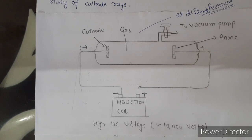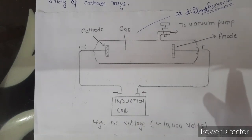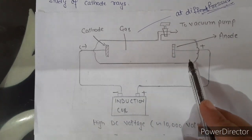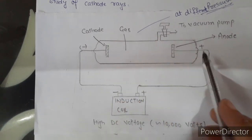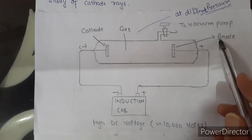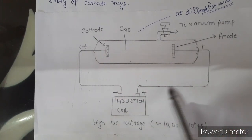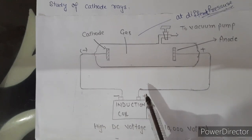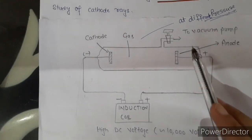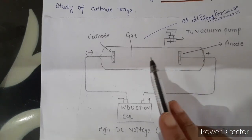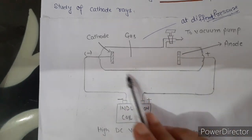In his experiment, William Crookes studied the conduction of electricity through gases at low pressure. He took a discharge tube made of glass, about 60 cm long, sealed at both ends and fitted with two metal electrodes — one cathode and one anode. The cathode is connected to the negative terminal of the battery and the anode to the positive terminal. The discharge tube also has a side tube fitted with a stopcock which can be connected to a vacuum pump to reduce the pressure of gas to any desirable value. This tube is also known as the Crookes tube.